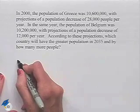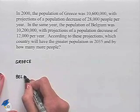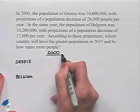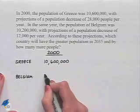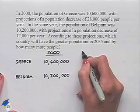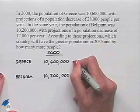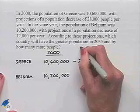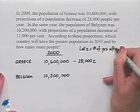We've got a comparison between what's occurring in Greece and what's occurring in Belgium. We're given information about what the population is in the year 2000. In Greece, we have 10,600,000 people. Now let's look at the loss per year. In Greece, we're going to end up with a decrease of 28,000 people per year — a subtraction of 28,000 times the number of years that occur. We're going to let X equal the number of years after the year 2000.